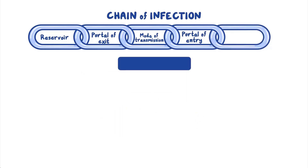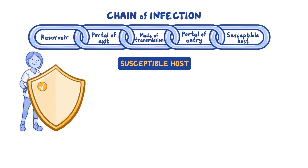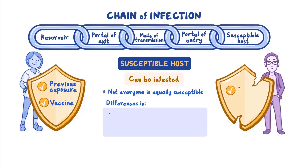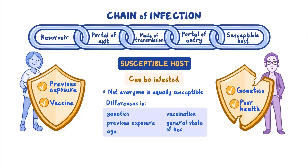Once the agent enters the host, some hosts can resist infection, particularly if they've been previously infected or have been vaccinated. But many hosts are susceptible, which means they can get infected with enough exposure. For example, young children are susceptible to many different infections. However, not everyone is equally susceptible to a given disease because of differences in genetics, previous exposure, age, vaccination, and general state of health.